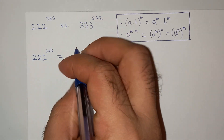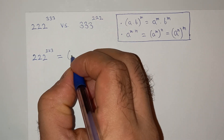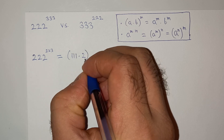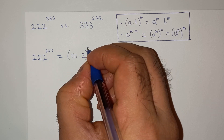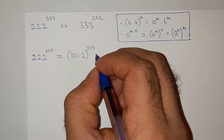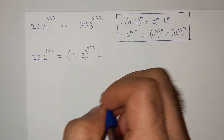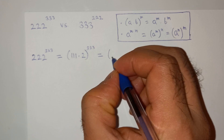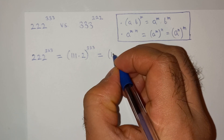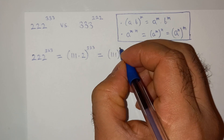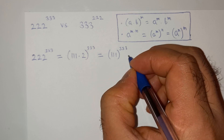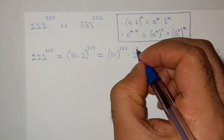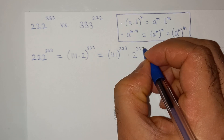Now I'm going to write this as triple 1 multiplied 2 power triple 3. All right, so this can be written as triple 1 power triple 3 multiplied 2 power triple 3.